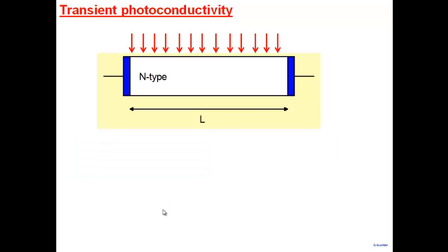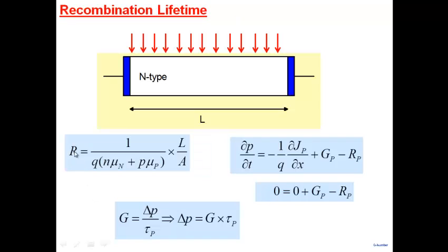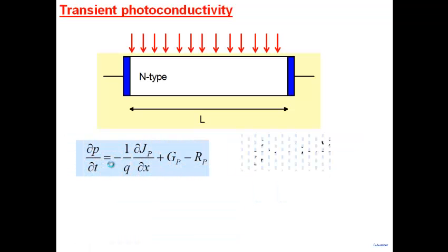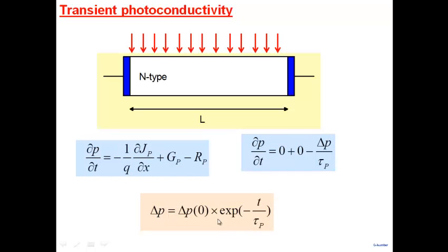The resistance — proportional to excess carriers — also decays with the same exponential time constant. Measuring resistance as a function of time after switching off the light gives you the recombination lifetime τ_p directly. This is the method: shine light, switch it off, and measure resistance vs. time to extract τ_p.